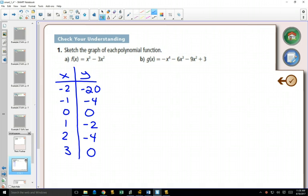So if I were to graph what I have so far, I would know the following things. Negative 2, I'm going to put negative 20 down here, is 1 point. Negative 1, negative 4, that would be about there. 0, 0. 1, negative 2. 2, negative 4. 3, 0. So this is the information that I have from my table of values.